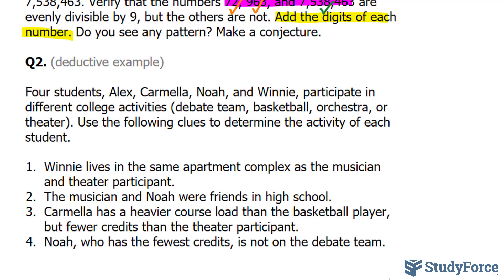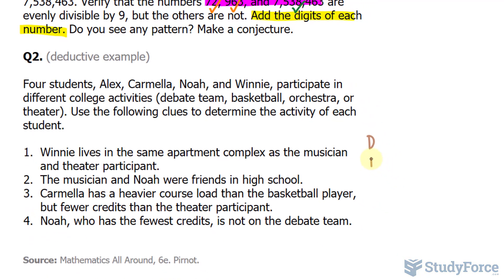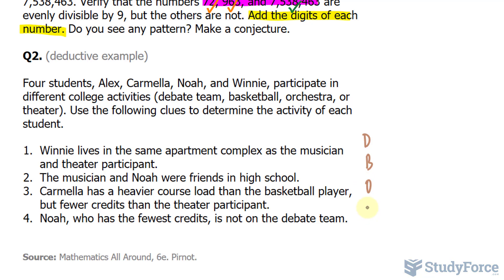Four students — Alex, Carmela, Noah, and Winnie — participate in different college activities. Use the following clues to determine the activity of each student. We have 4 activities and 4 students, so let's create a table. The activities are debate team, basketball, orchestra, and theater. The 4 students — Alex, Carmela, Noah, and Winnie — will be listed as columns. We need to determine what each student does for fun at school.